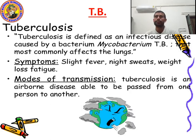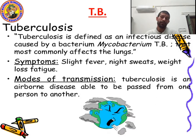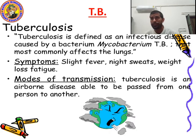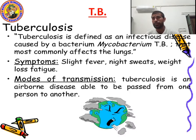The pathogen responsible for TB disease is Mycobacterium tuberculosis. It affects the lungs — L-U-N-G-S. Tuberculosis is an infectious disease caused by the bacterium Mycobacterium tuberculosis, which most commonly affects the lungs and can be very harmful to your lungs.